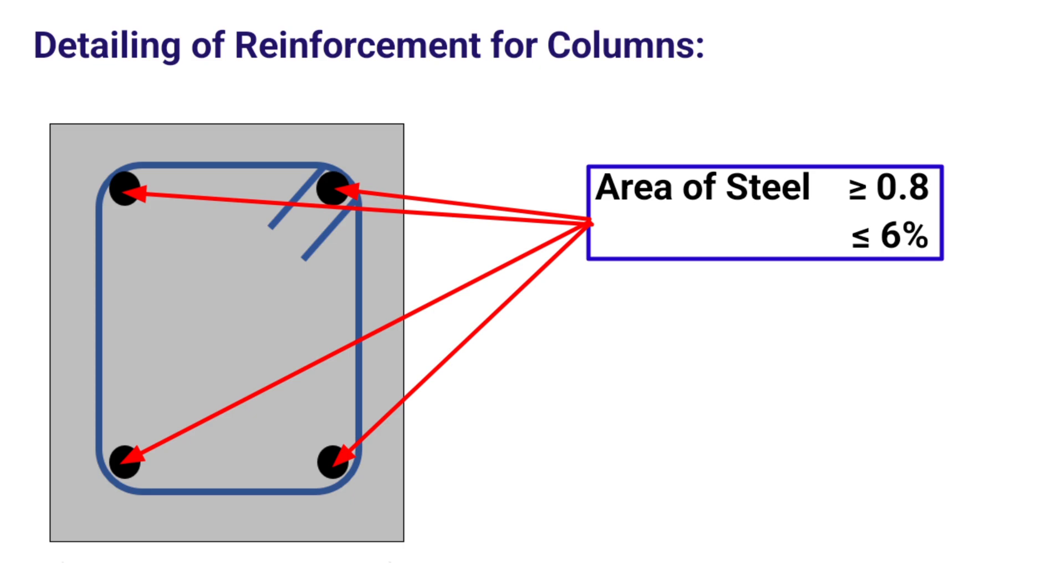However, from the practical point of view, the maximum percentage of steel shall be limited to 3% to avoid the congestion of bars while concreting, and especially when there is a need to overlap the bars.